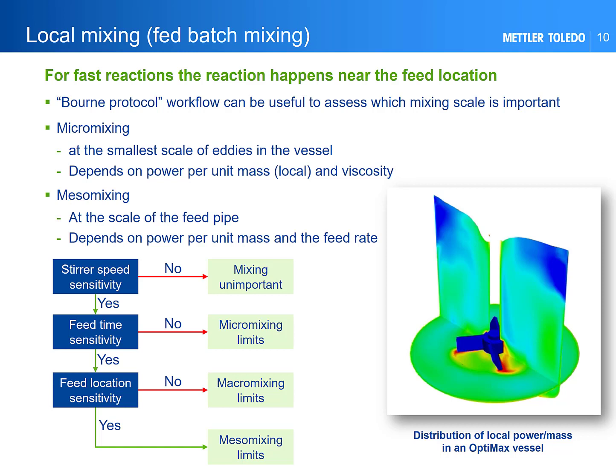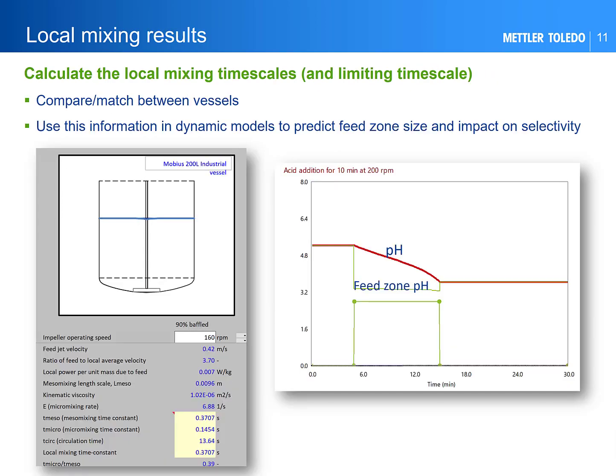In this protocol, macromixing refers to blending on the scale of the vessel. In the toolbox we can calculate timescales for meso- and micromixing and see which one is the limiting one. We also consider if you have back-mixing into the feed pipe, which results in the reaction happening in a very low mixing environment. These calculated timescales can be used in a dynamic model to predict the size of the feed zone and implications on the reactions. The plot on the right shows pH in the feed zone in green compared to the average pH in the bulk of the vessel in red during an acid addition.